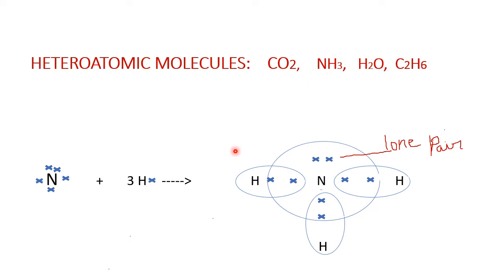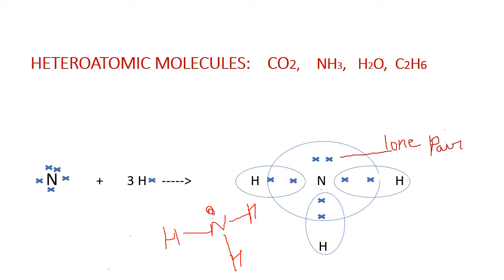Let us discuss in detail about the formation of ammonia molecule. In case of nitrogen, there are five electrons in its valence shell, so it requires three more electrons to complete its octet. Hence, a nitrogen atom can share three of its electrons with three hydrogen atoms to form three nitrogen-hydrogen single covalent bonds. Two electrons in the nitrogen atom remain unshared and do not take part in bond formation. Even though responsible for the octet configuration, they do not participate in bond formation, and this unshared electron pair is known as a lone pair electron.